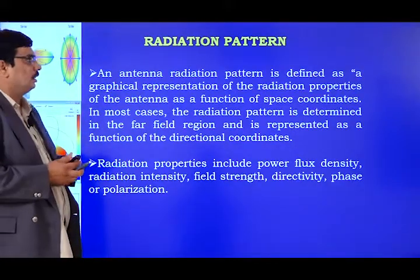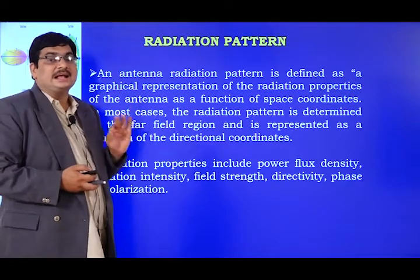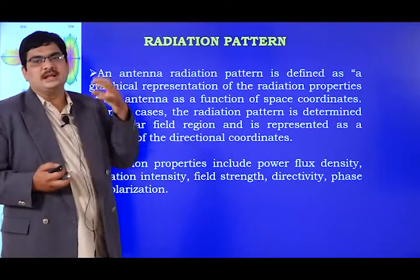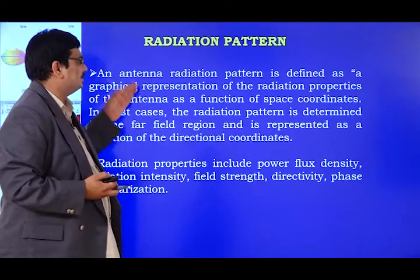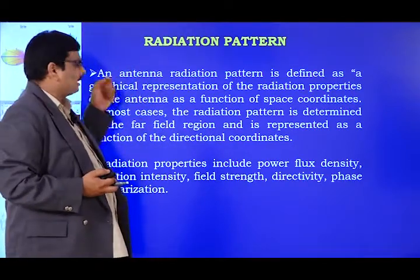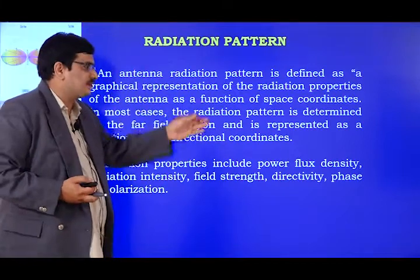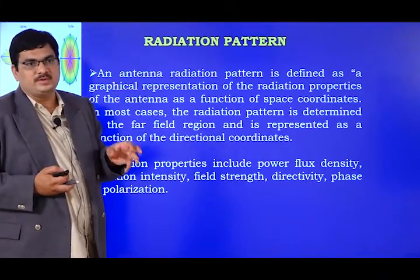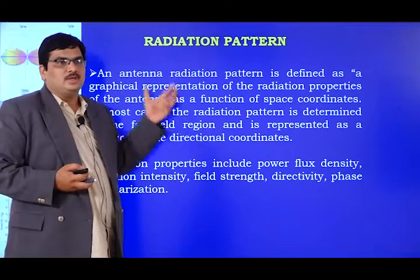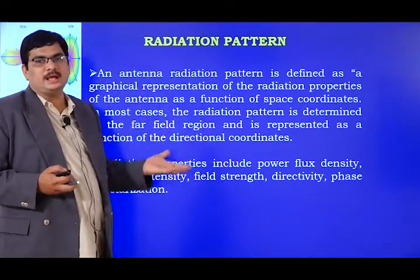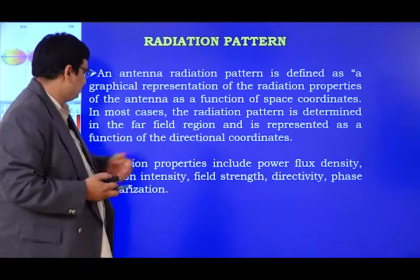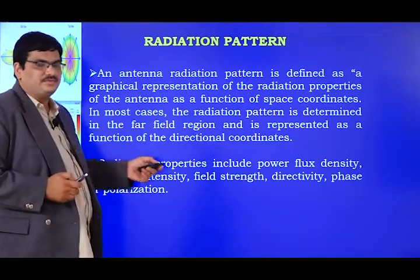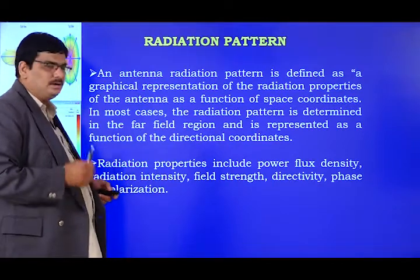A radiation pattern is a graphical or pictorial representation of the radiation properties of an antenna in terms of power or electric field. It is plotted as power versus theta or power versus phi in different coordinate systems. The properties represented include power flux density, radiation intensity, field strength, directivity, and polarization.